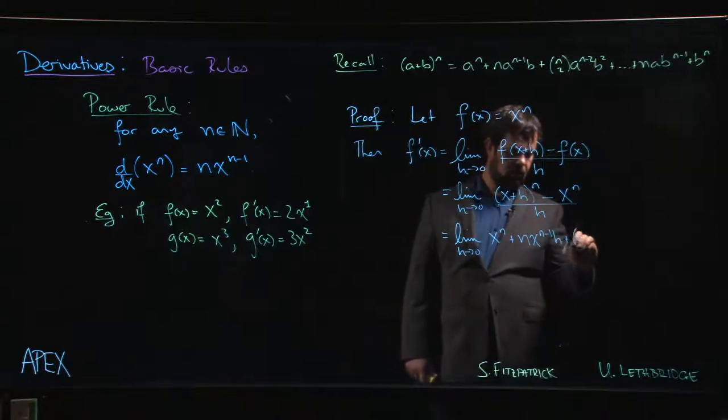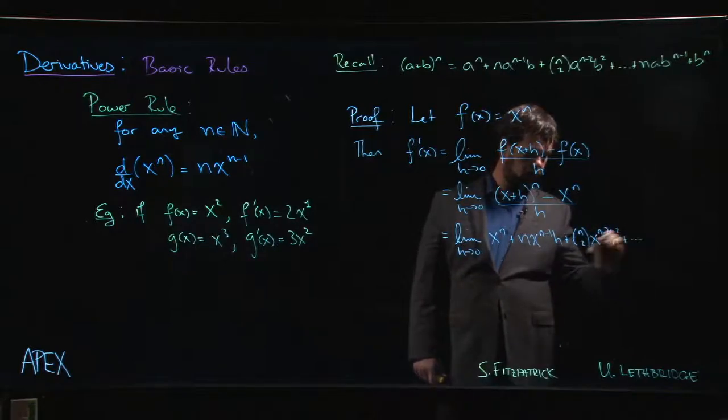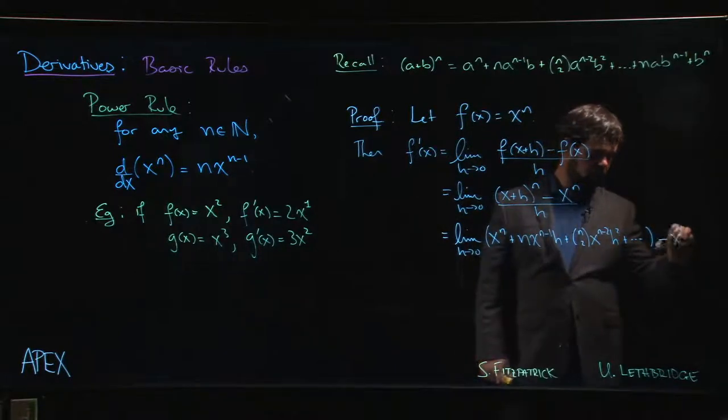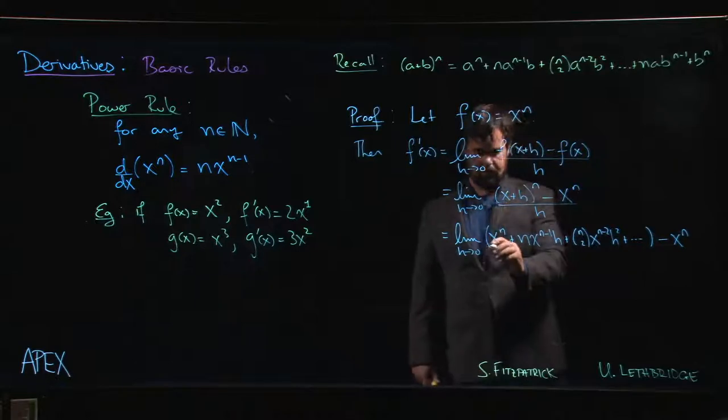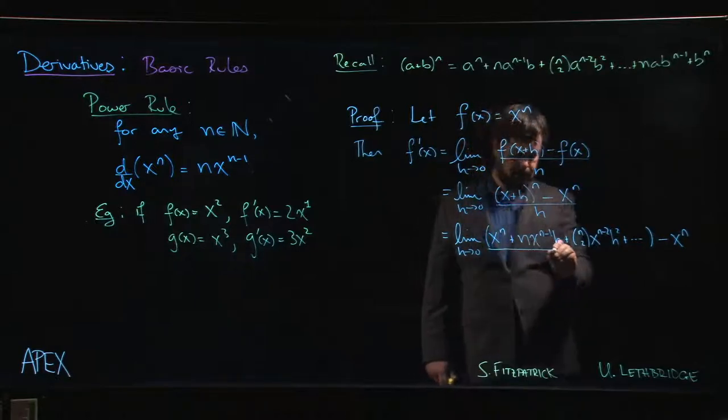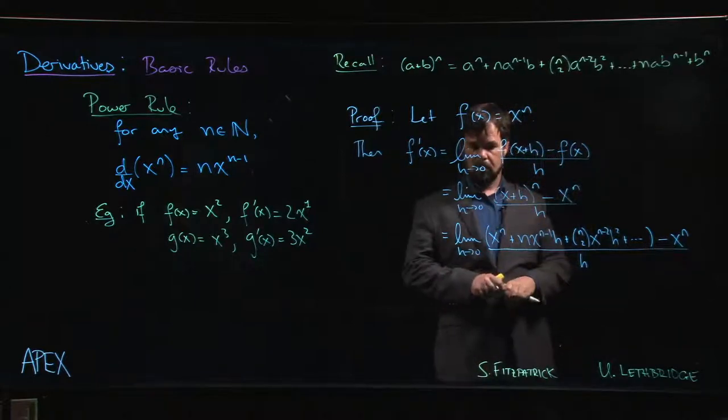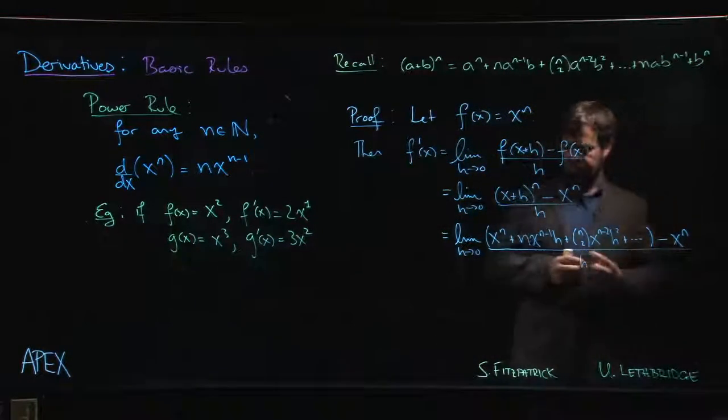And the next one is going to be n choose 2, x to the n minus 2 h squared, and so on. All the other terms involve at least an h cubed. All divided by h. As usual, we attempt to simplify.